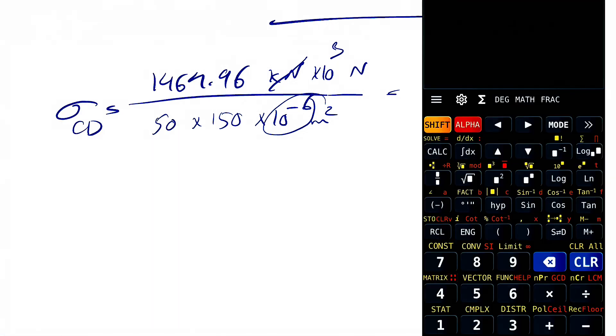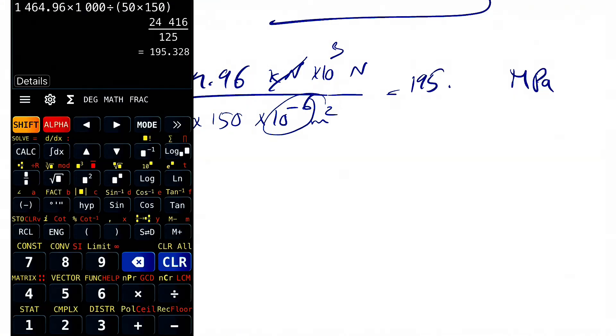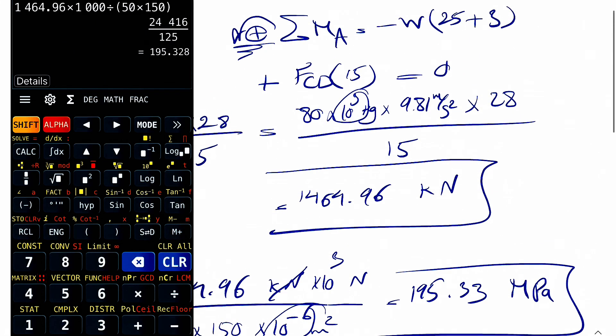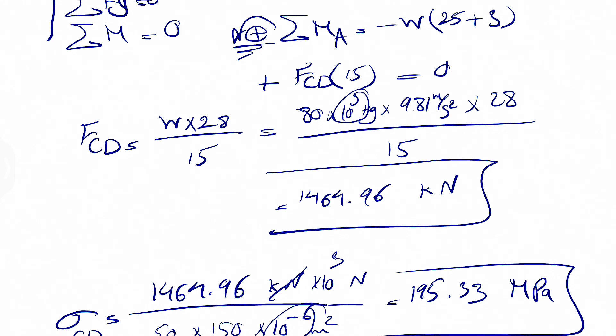So all we need to do in here is to do 1464.96 times 1000 divided by 50 times 150. And this is going to give us 195.33 megapascal. And the final answer for this question. Hope everything was clear. Let me know if you guys have any questions and you guys take care. I'll see you in the next video. Have a good one.